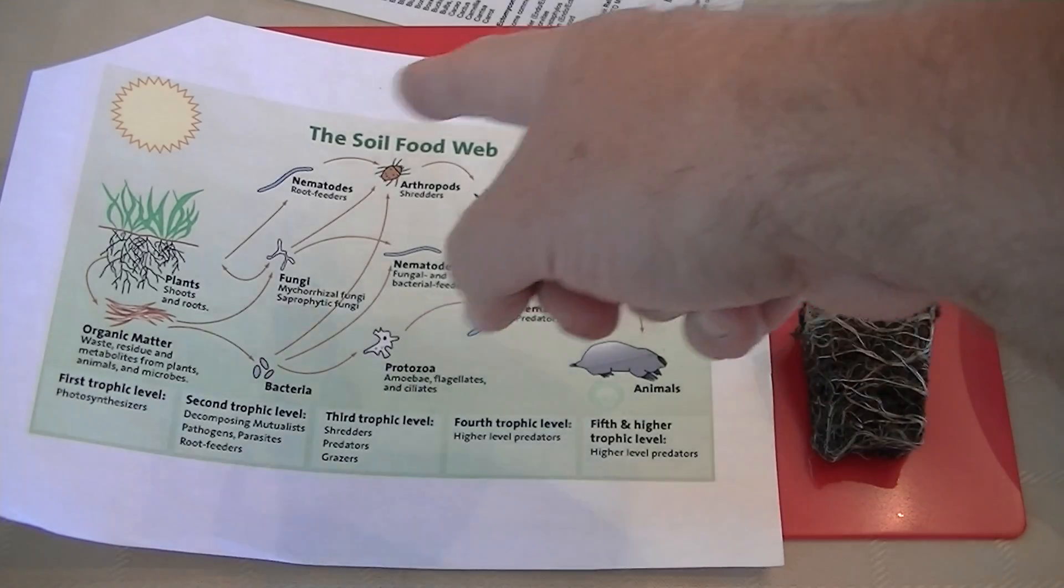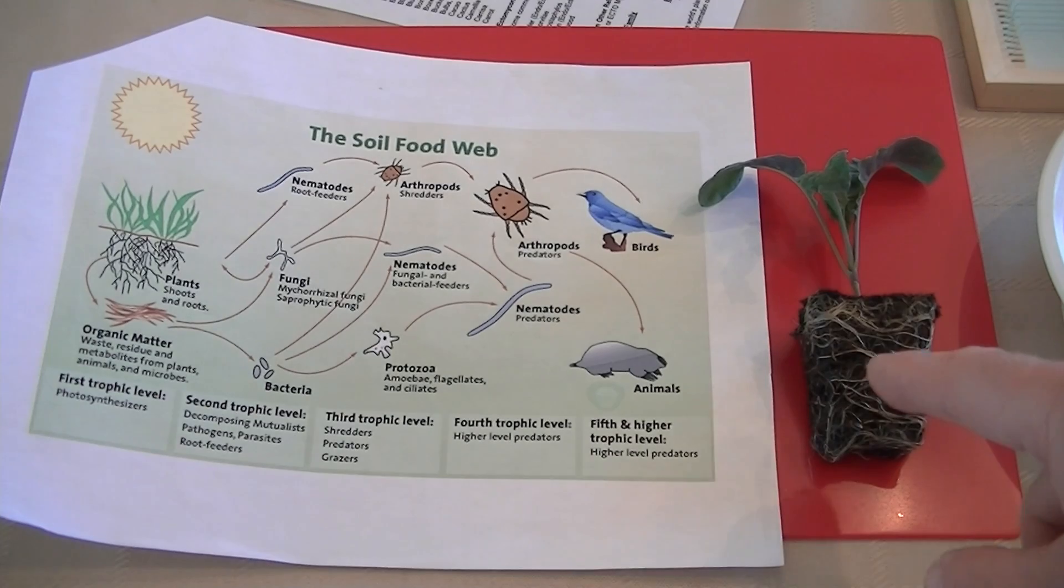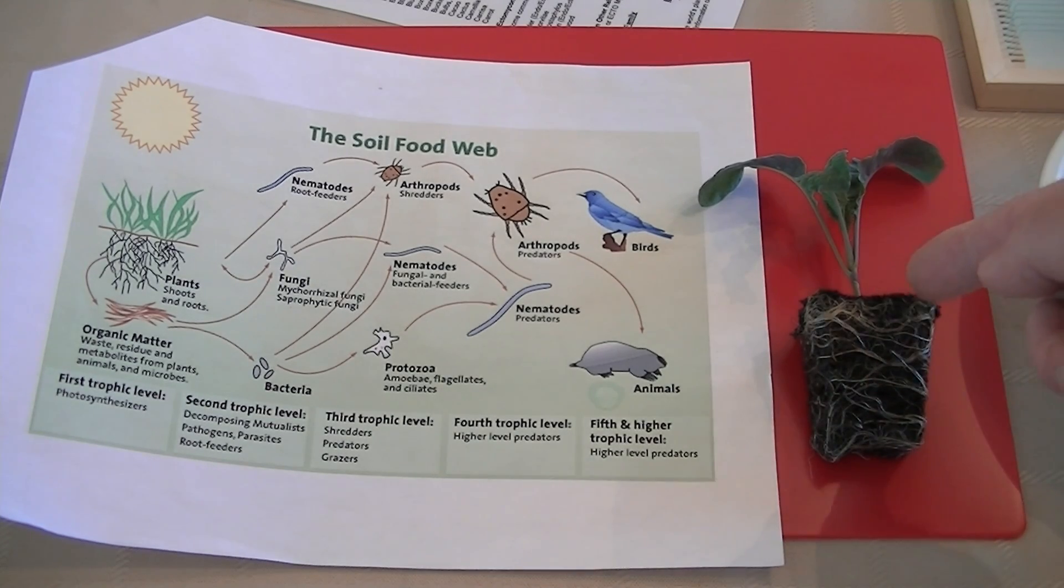So to clarify, this is the whole soil food web. We might just have the bacteria in there, but we do not have the mycorrhizal fungi growing on the brassica. Now I know it doesn't eat it, but let's say this is a tomato plant again.